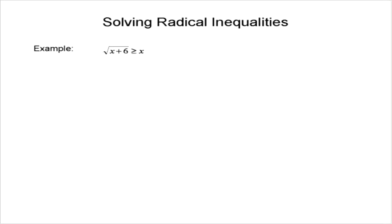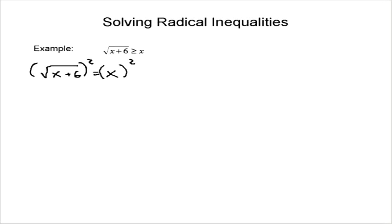The first thing we're going to do is take this and make it an equation. So we're going to switch it to: the square root of x plus 6 equals x. All we've done is made an equation. Now, I would isolate for the radical, but the radical is nicely isolated already, so we just have to square both sides.